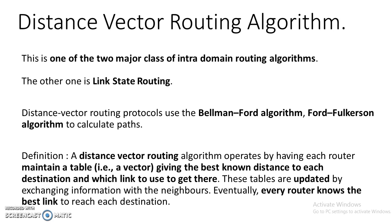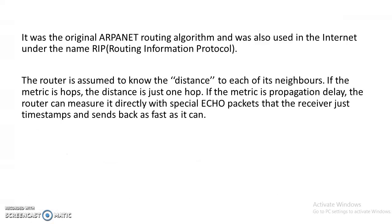Talking about Distance Vector Routing Algorithm, this is one of the two major classes of intra-domain routing algorithms. The other one is Link-State Routing. Distance Vector Routing Protocol uses the Bellman-Ford Algorithm to calculate paths. A Distance Vector Routing Algorithm operates by having each router maintain a table — a vector giving the best known distance to each destination and which link to use to get there. These tables are updated by exchanging information with neighbors. Eventually, every router knows the best link to reach each destination. It was the original ARPANET routing algorithm and was also used in the internet under the name Routing Information Protocol.